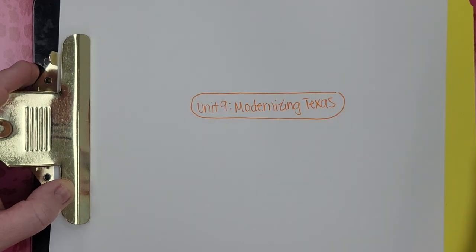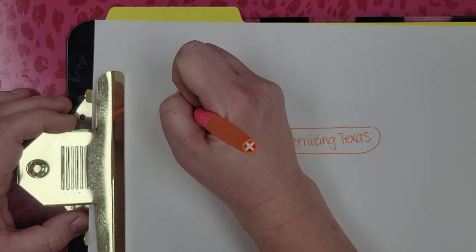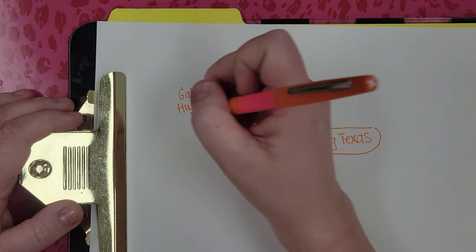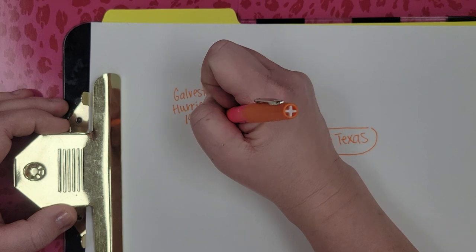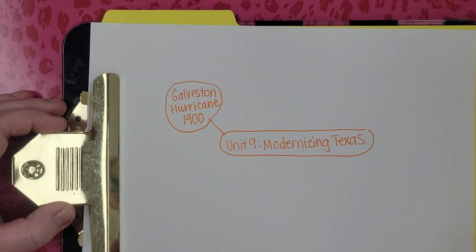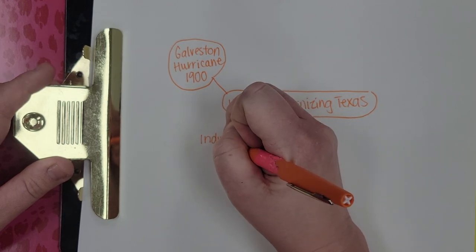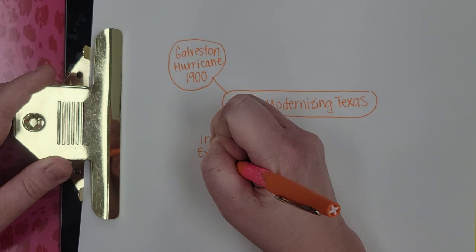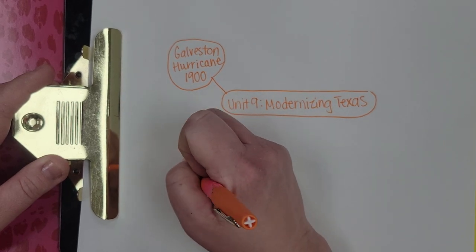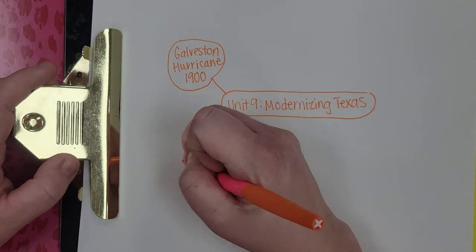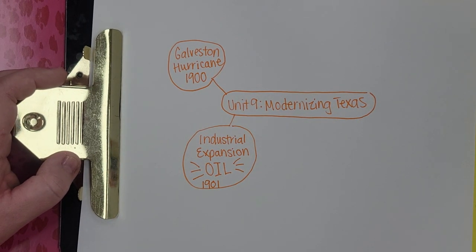A few major events happened in Unit 9. The first of those events is the Galveston Hurricane, which happened in 1900. The next major event is an oil boom — we're going to call this industrial expansion, but we know that also means oil. The discovery of oil at Spindletop happened in 1901.